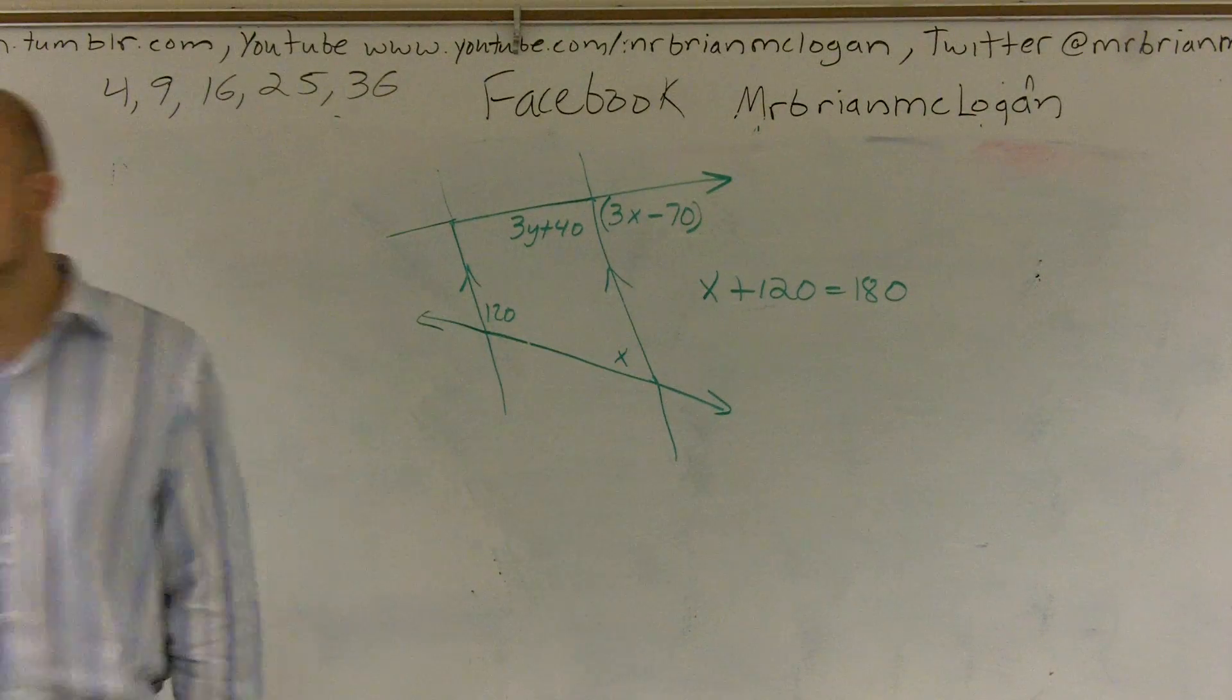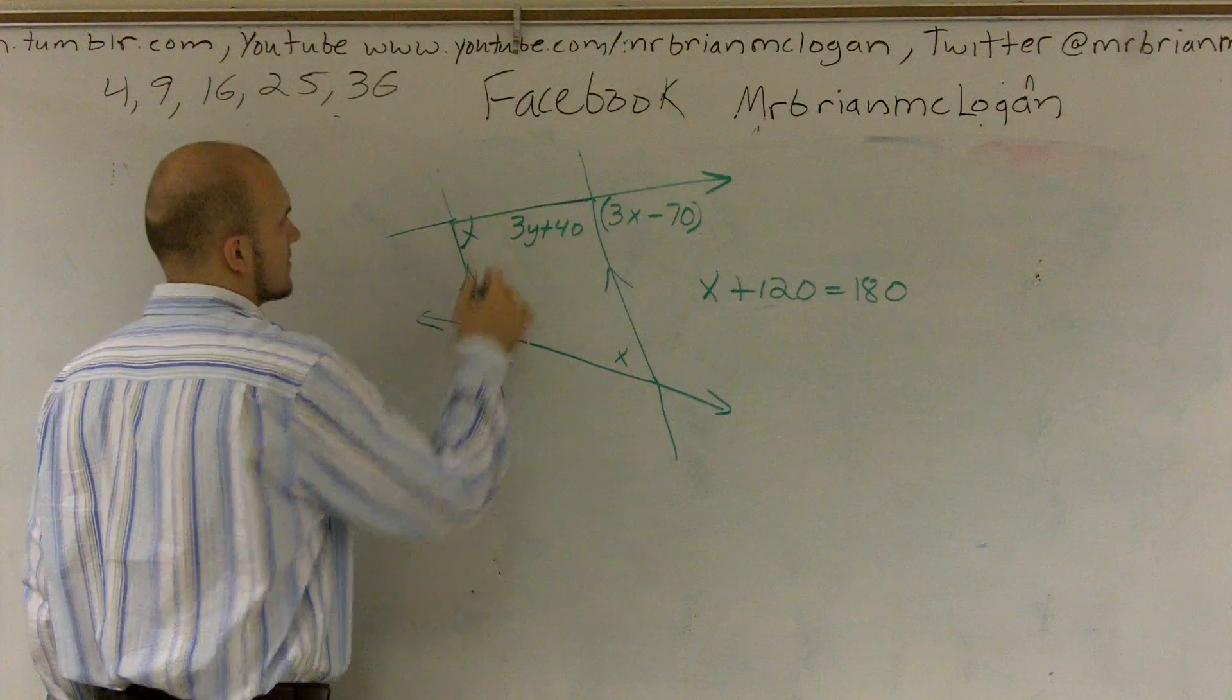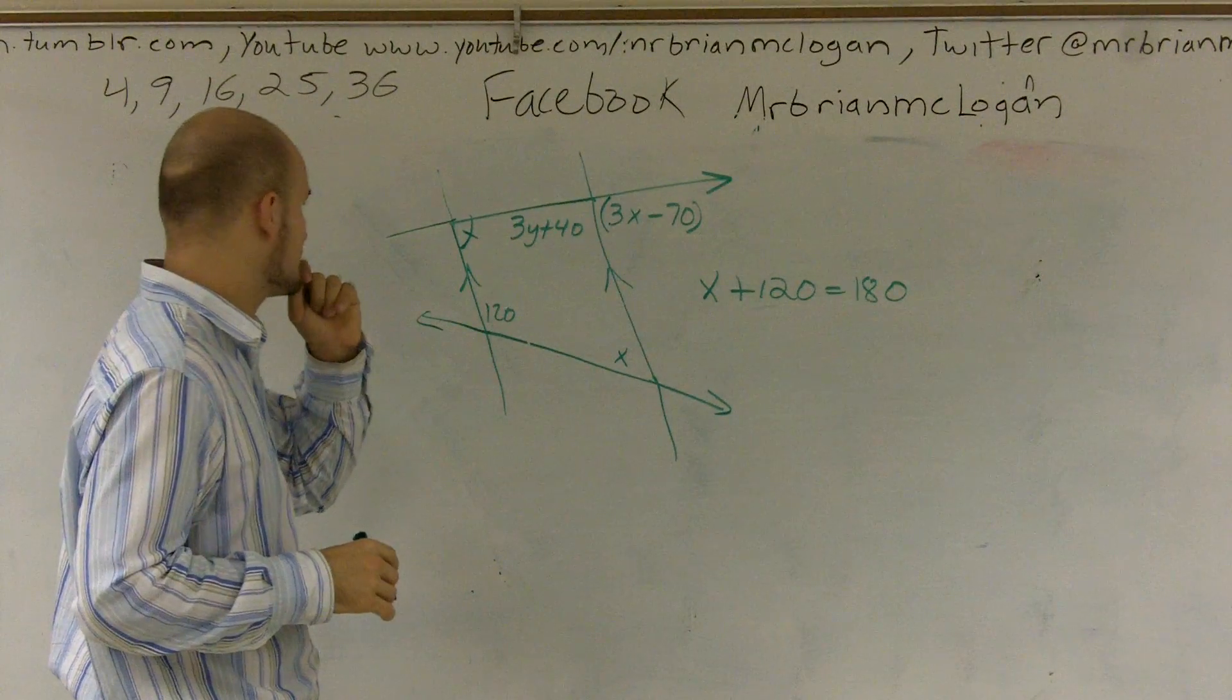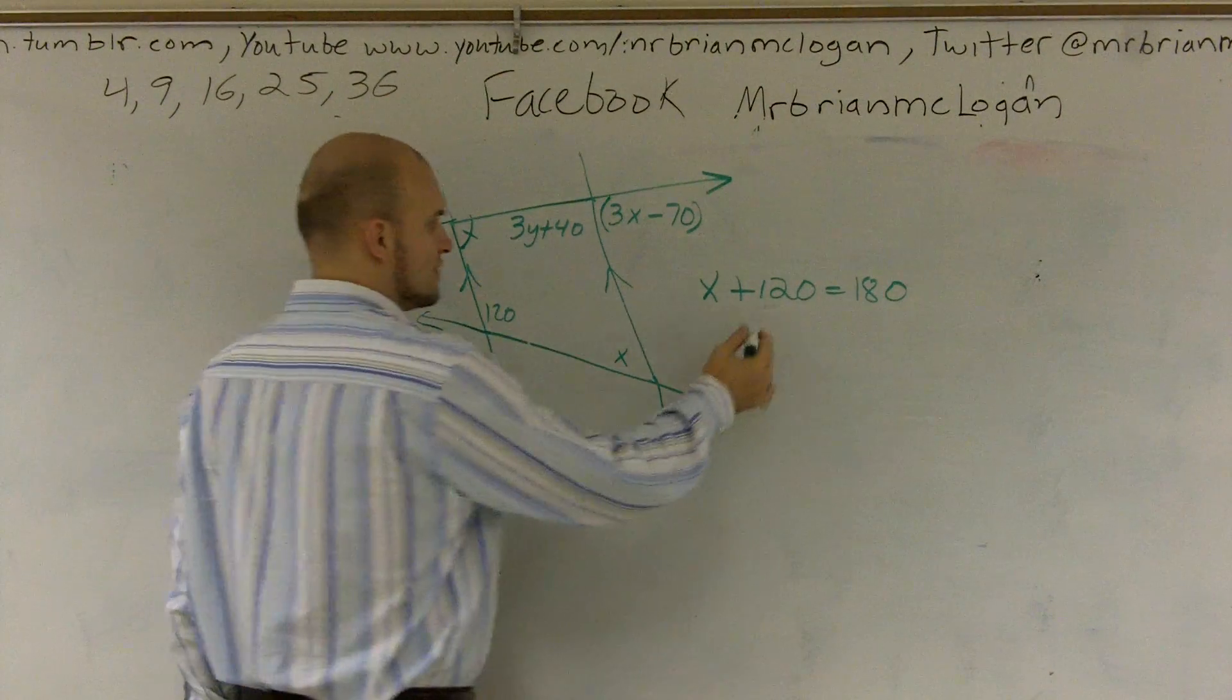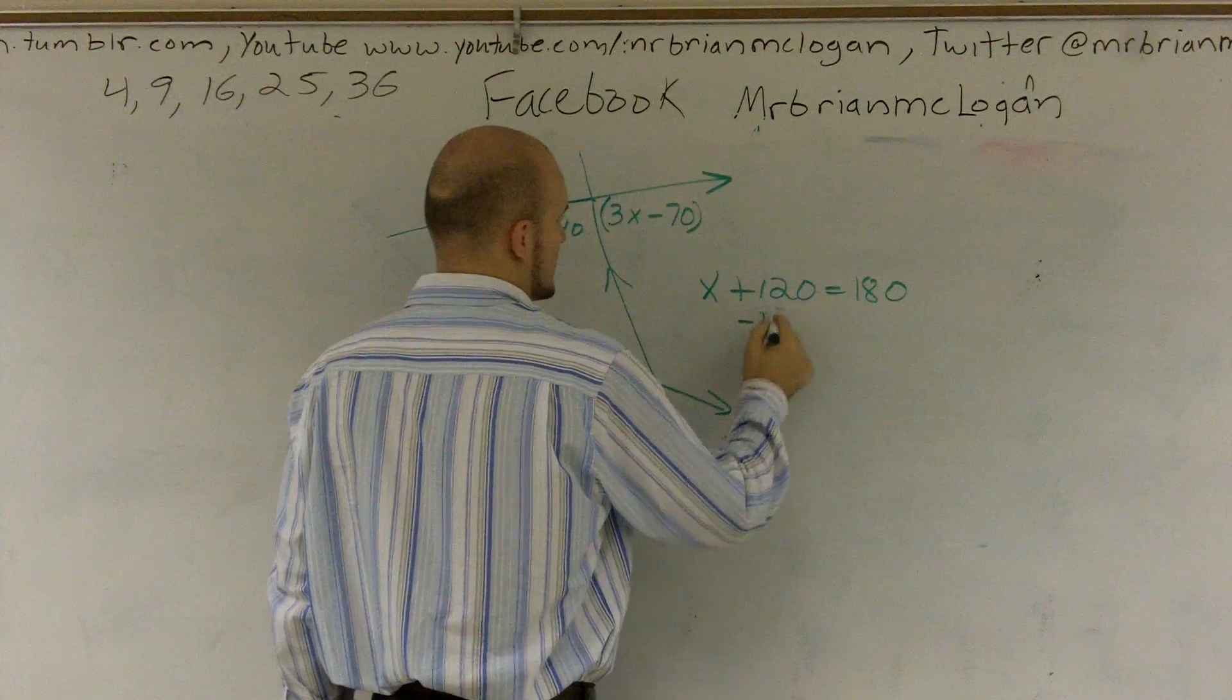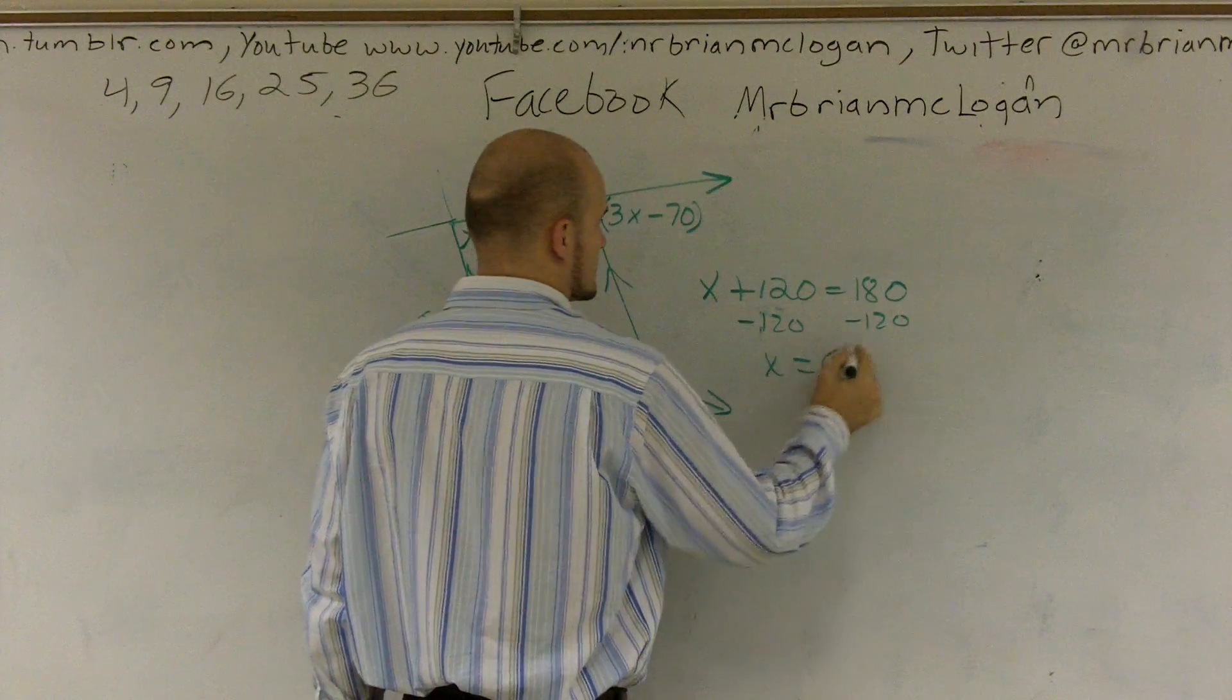Do I know what other angles is? No, I don't. So we don't even know what this angle is either. So add these up, so let's solve for x. So I subtract 120. x equals 60.